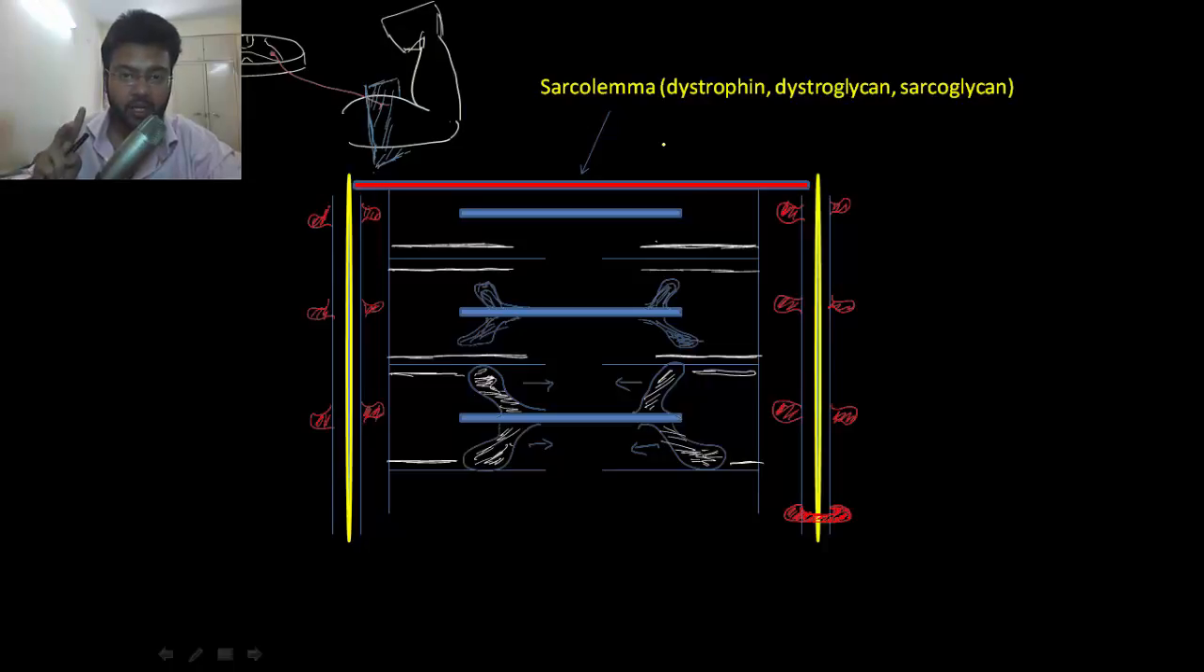dystrophin, dystroglycan, and sarcoglycan. The triad structures on the left and right side are called the muscle triad.